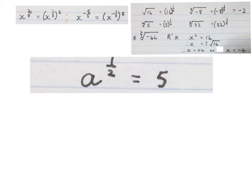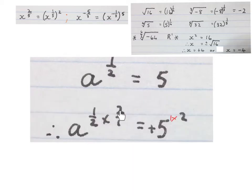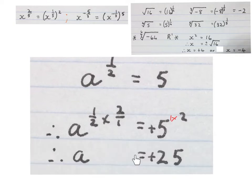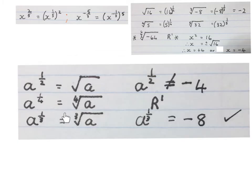So let's start with an easy one. They give us a to the power of a half equals 5, and they ask us to solve for a. To solve for a, we will multiply by 2 over 1 on both sides with the exponents. This 1 over 2 times 2 over 1 gives us a to the power of 1 equals plus 25. Just keep in mind: a to the power of a half cannot be a negative number — that will be non-real. And a to the power of a third can be negative. All this pre-knowledge is absolutely necessary before we can move on.